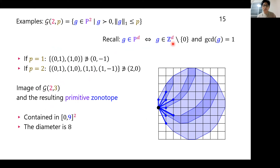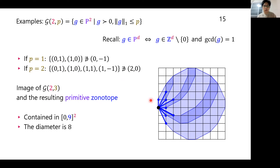Here are some examples. The set E(2,p) looks like this. Recall that g is primitive if g is a nonzero lattice point with GCD 1. If p equals 1, this set consists of just two lattice points and does not include (0,-1) due to the sign constraint — if it were included, those two line segments would be collinear. Here is the image for d equals 3 and the resulting primitive zonotope obtained from E(2,3).